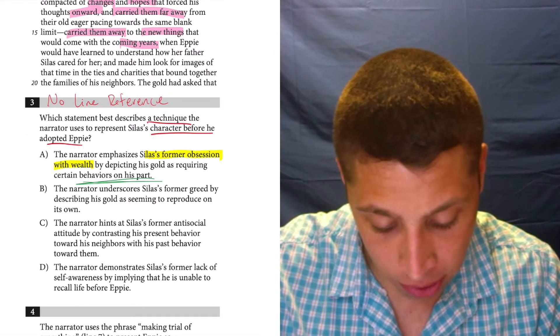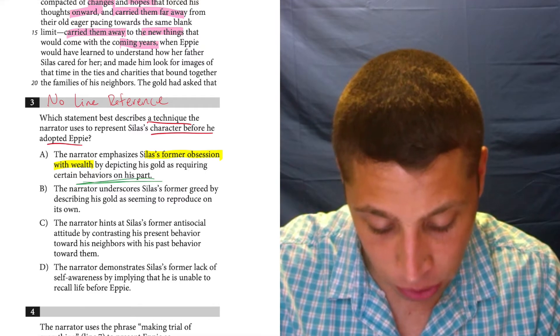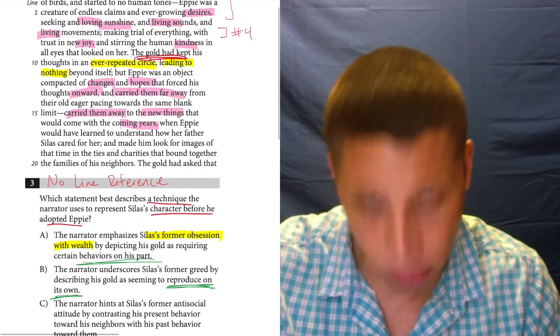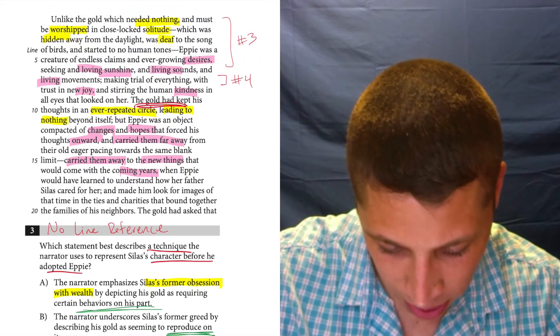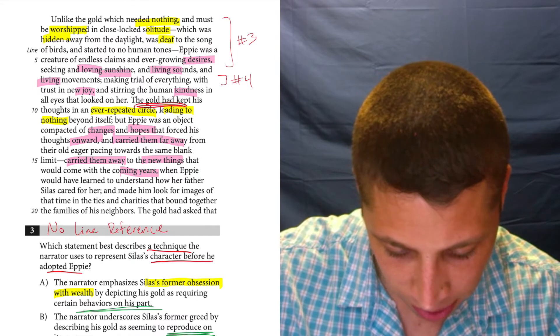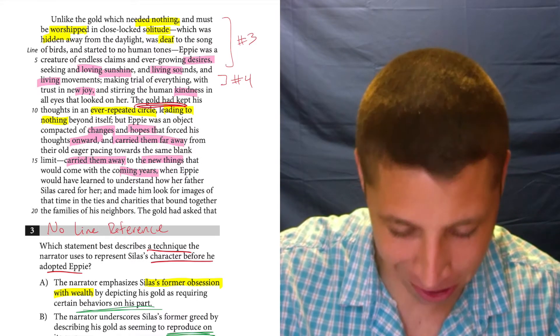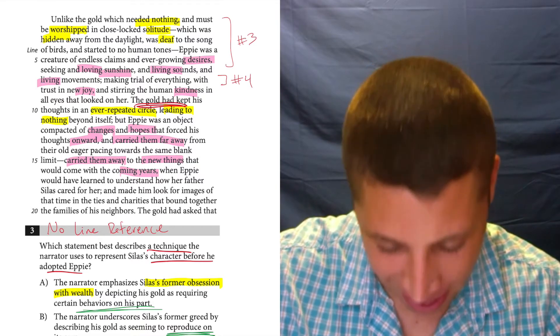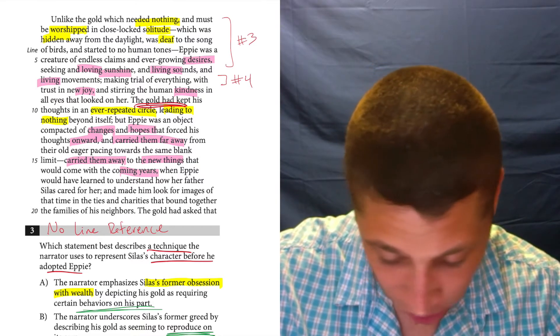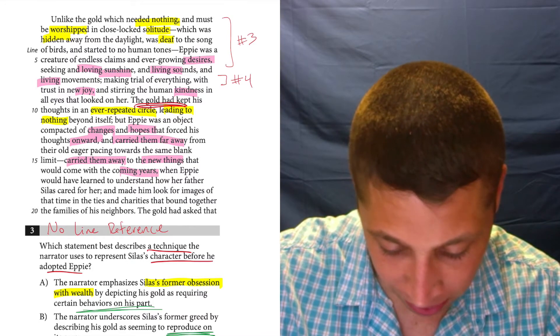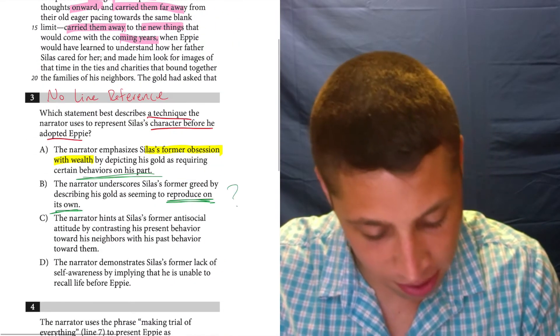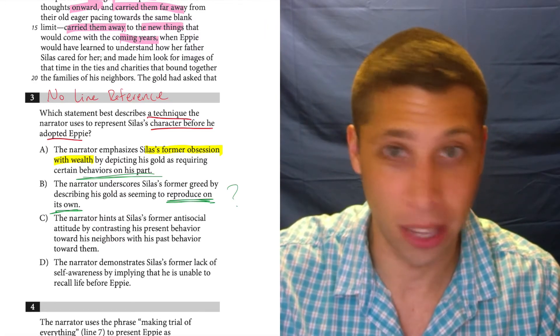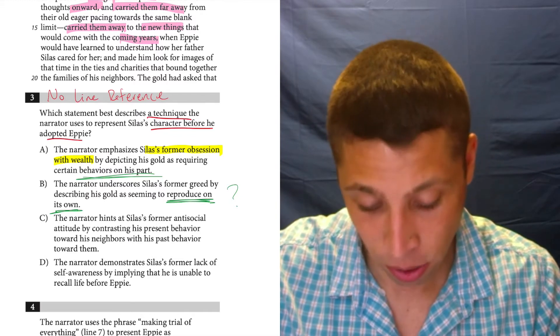B, the narrator underscores Silas's former greed by describing his gold as seeming to reproduce on its own. Well, reproduce on its own. That's really specific. The gold reproduces. It's hidden away. It needs nothing. That doesn't mean that it reproduces on its own. It's not, it's gold. It's not like a living thing.